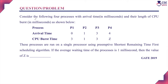The problem is: consider the following four processes with arrival time and their length of CPU burst time given in milliseconds. There are four processes with respective arrival time and CPU burst time. For process P4, the CPU burst time is given as Z. So we need to find the CPU burst time for process P4. These processes are run on a single processor using preemptive shortest remaining time first scheduling algorithm. If the average waiting time of the processes is one millisecond, then the value of Z is.